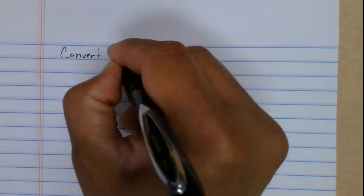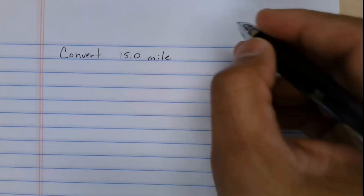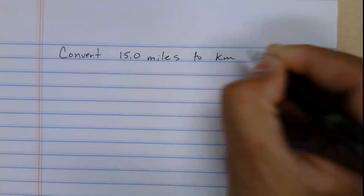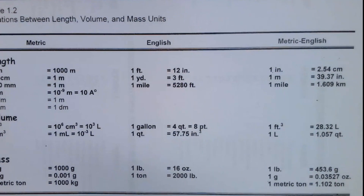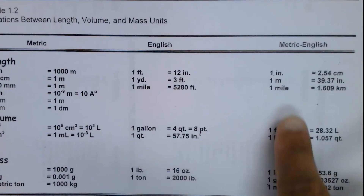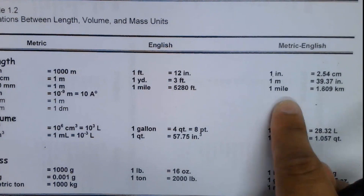We can do calculations — but can we show and explain them? Let's start with a simple example: convert 15.0 miles to kilometers. This type of conversion appears in every chapter one of every chemistry book. The purpose is to practice showing your work and explaining what's going on. We use conversion ratios — conversion factors — and there's a relationship between kilometers and miles that we'll use.